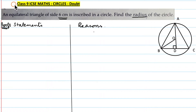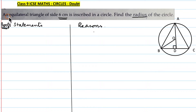Hello, my Class 9 students. Today we are going to solve a doubt from Maths Chapter Circles — Class 9 pre-board syllabus. Circles is an important chapter and some children find this question difficult, so I decided to make a video on it. The question reads: an equilateral triangle of side 6 centimeters is inscribed in a circle — find the radius of the circle.